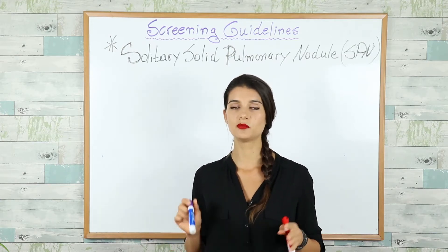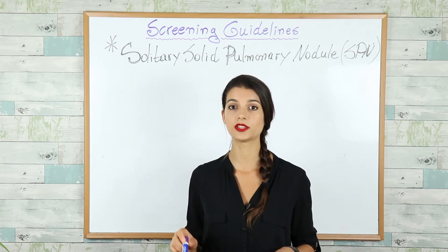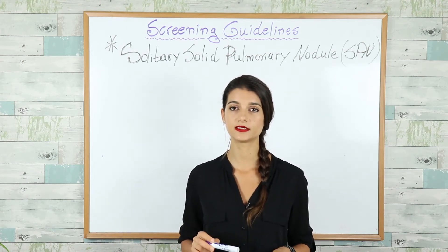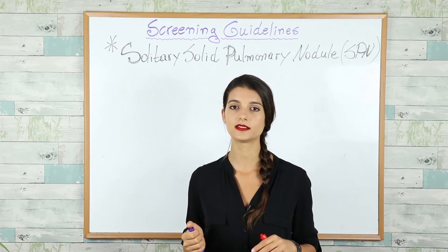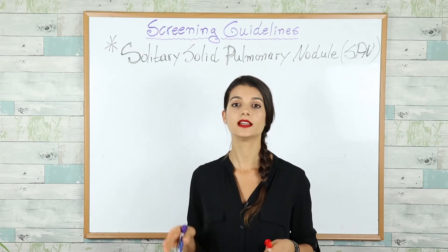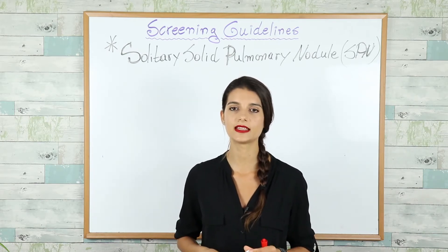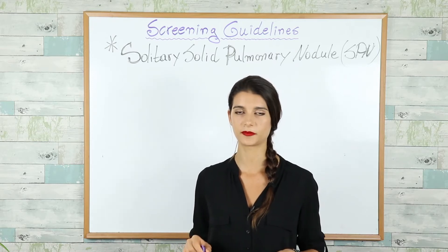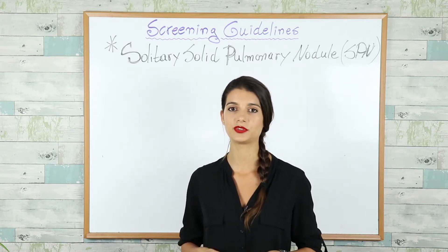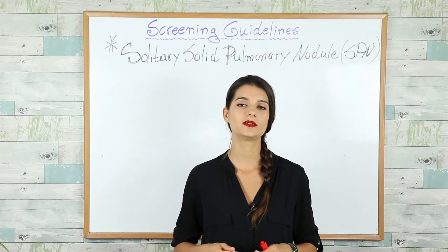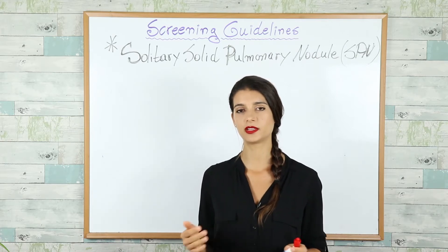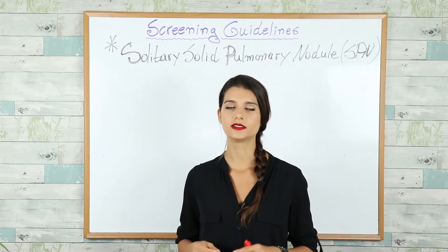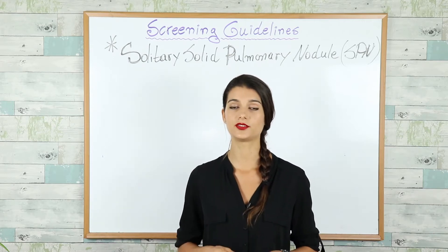If you see multiple lesions in the lung, think metastatic — not primary lung cancer. Metastatic lung cancer is never a solitary pulmonary lesion; it's always multiple lesions. The most common cancers that give metastatic lung disease are melanoma, breast cancer, sarcoma, and testicular cancer, just to name a few.